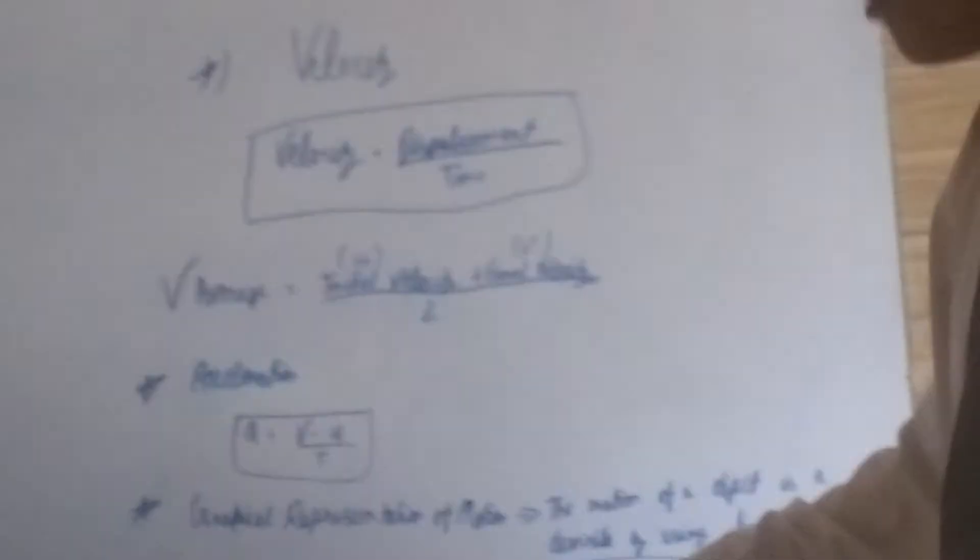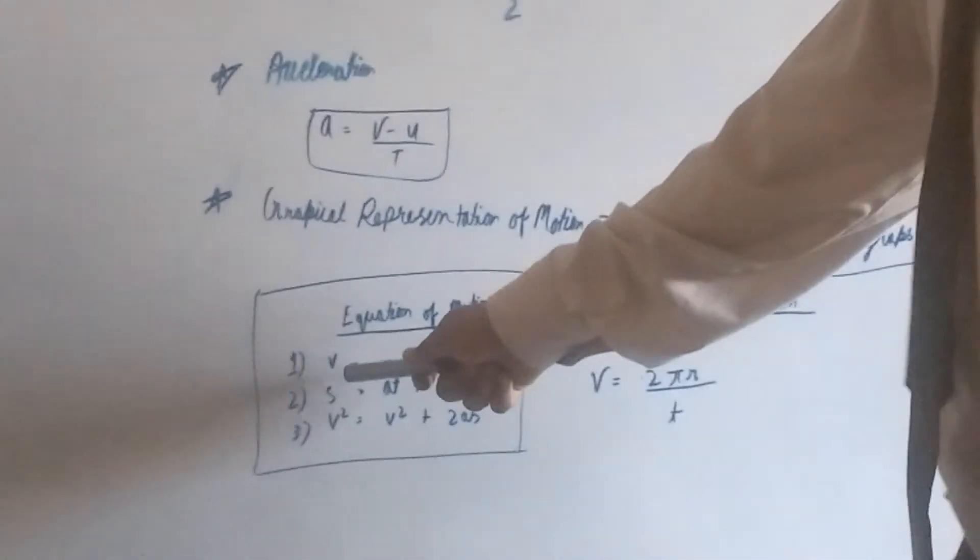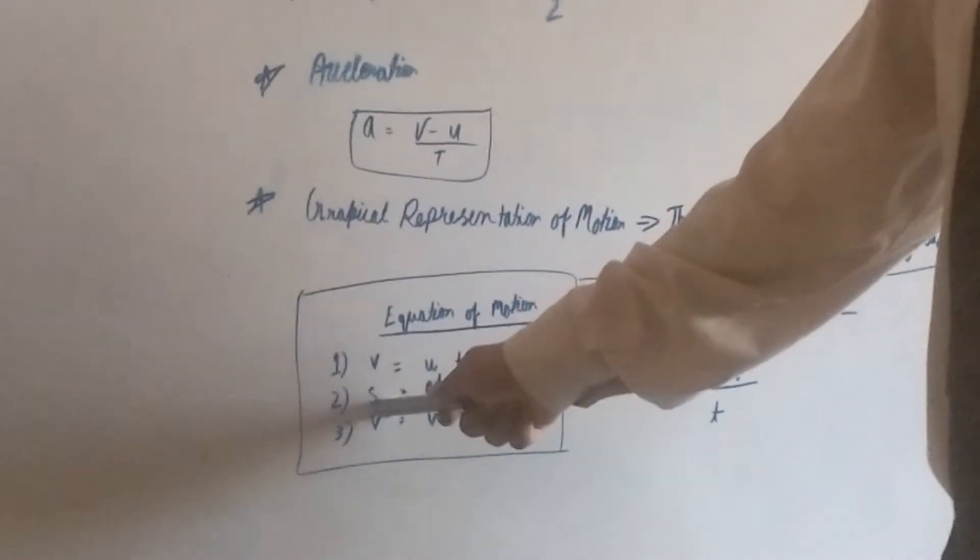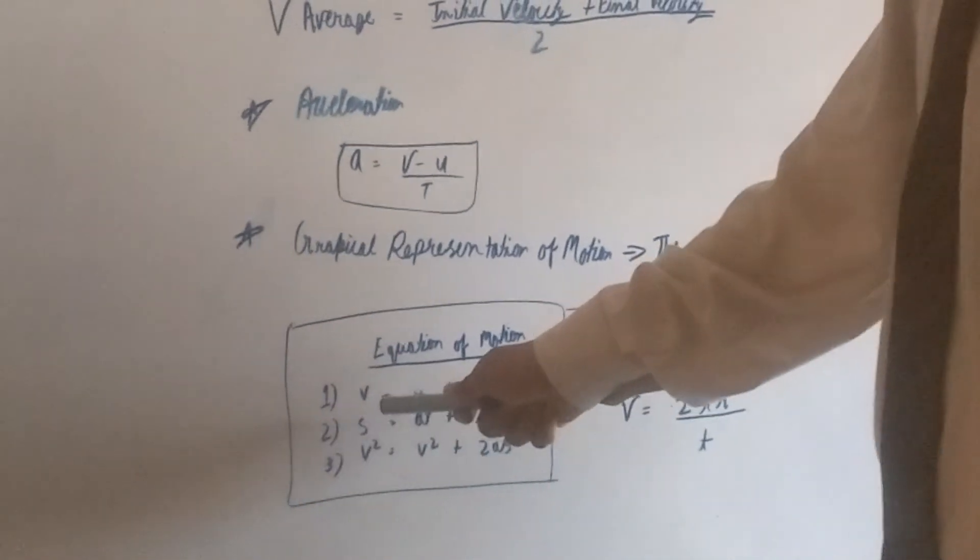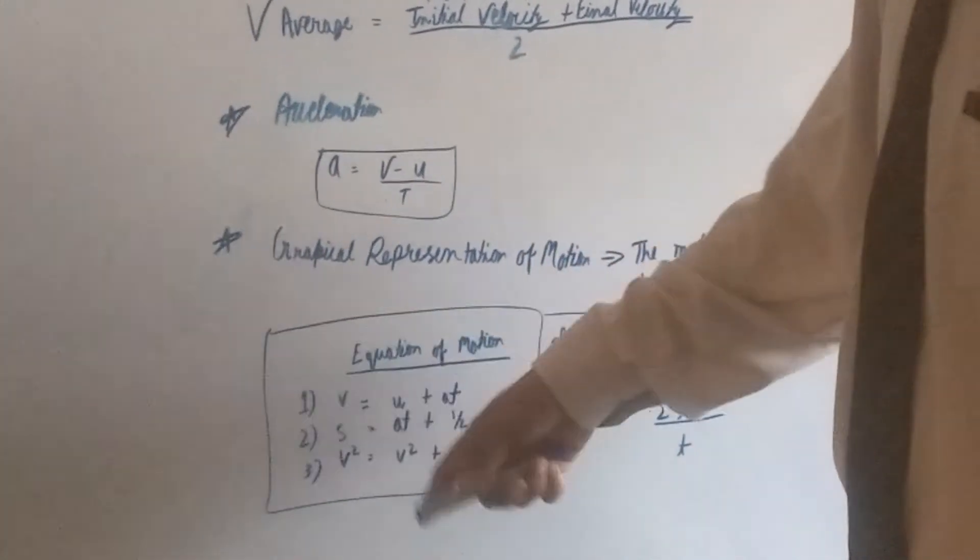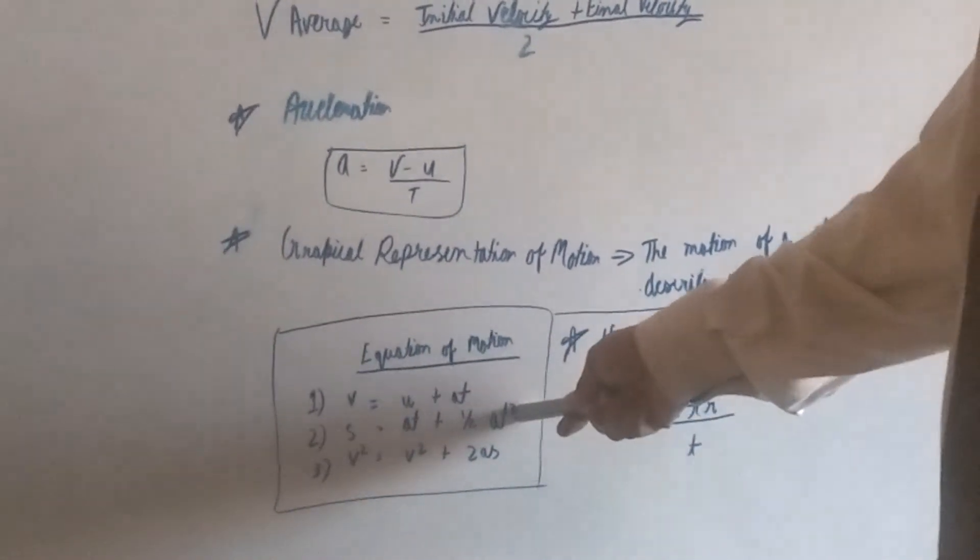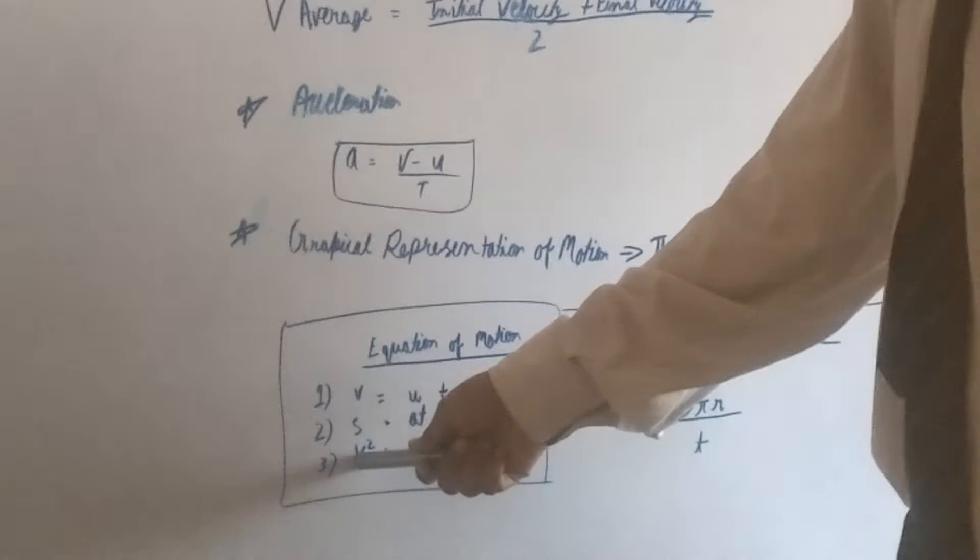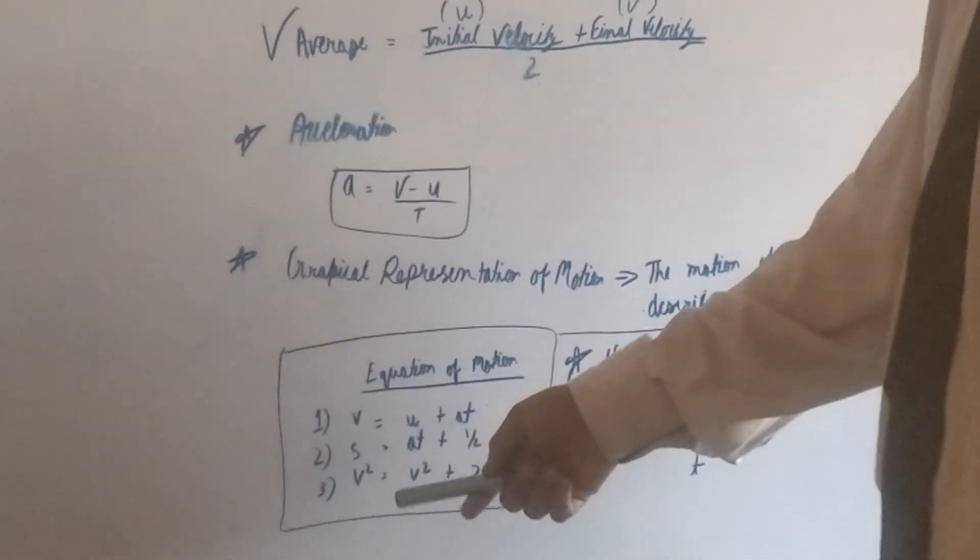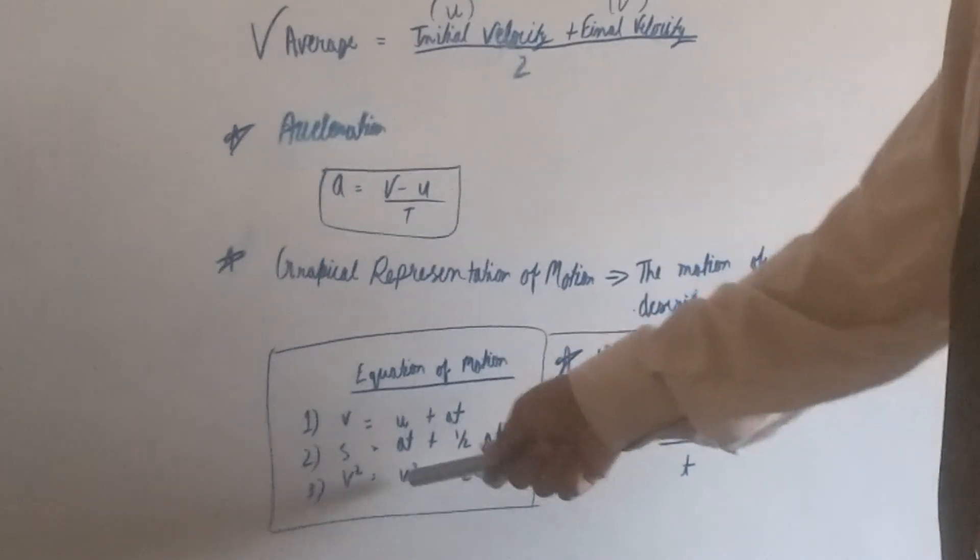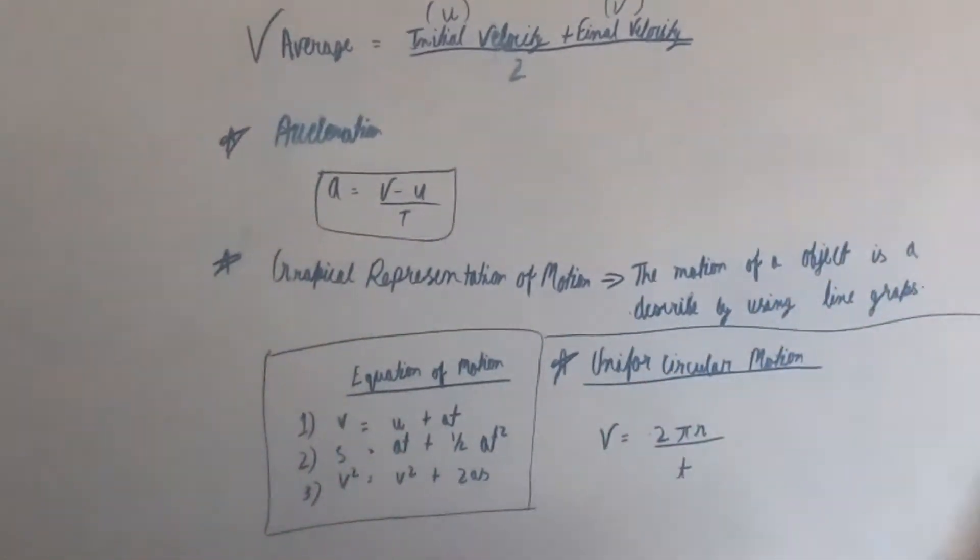Equations of motion: First, velocity v equals u plus at. Second, to find distance s, s equals ut plus half at squared. Third, for final velocity, v squared equals u squared plus 2as.